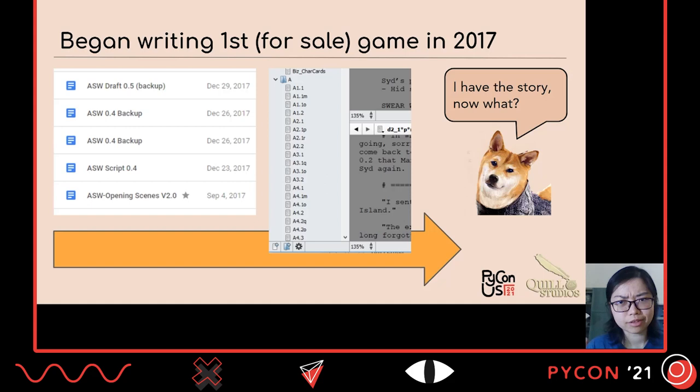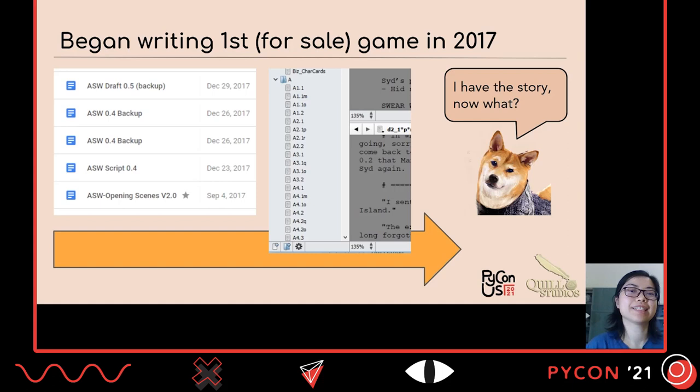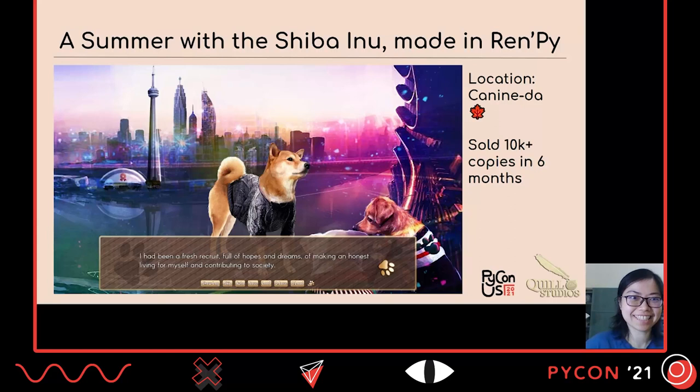So now I had the story. The question was: how do I get this idea from a story — with the logic of the game and everything — to an actual game? It took me two years, and I'm going to share how Python and this open-source engine, RenPy, helped me. I'm really excited to tell you about it.